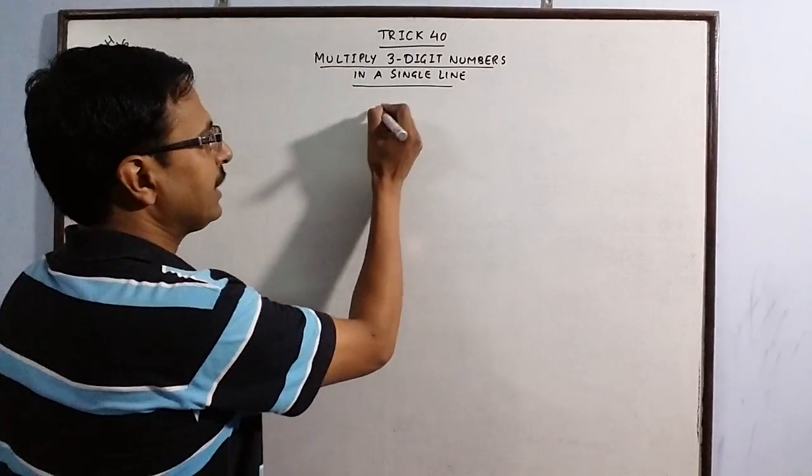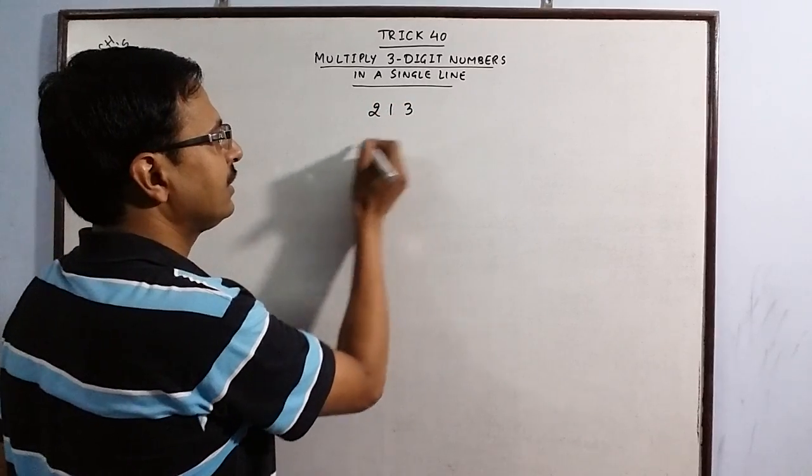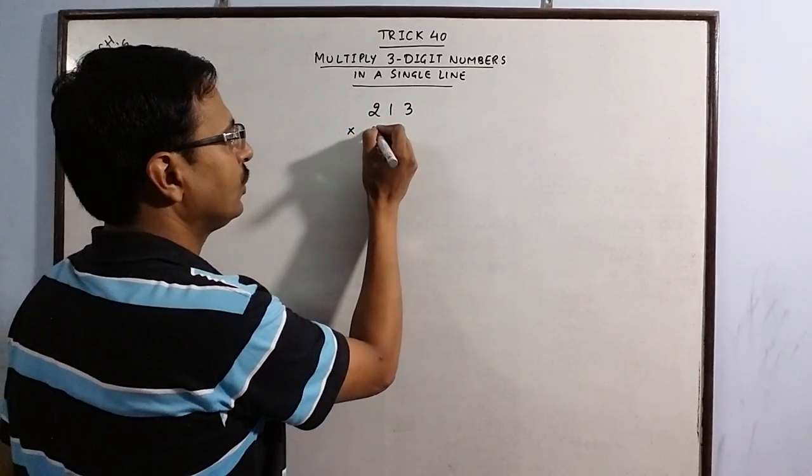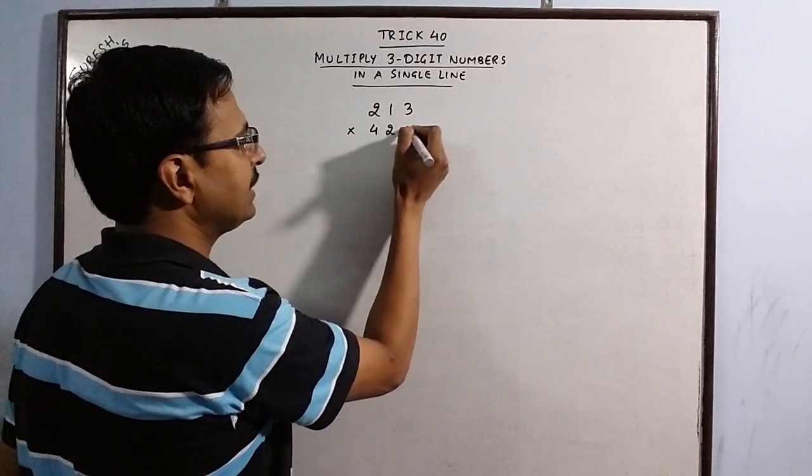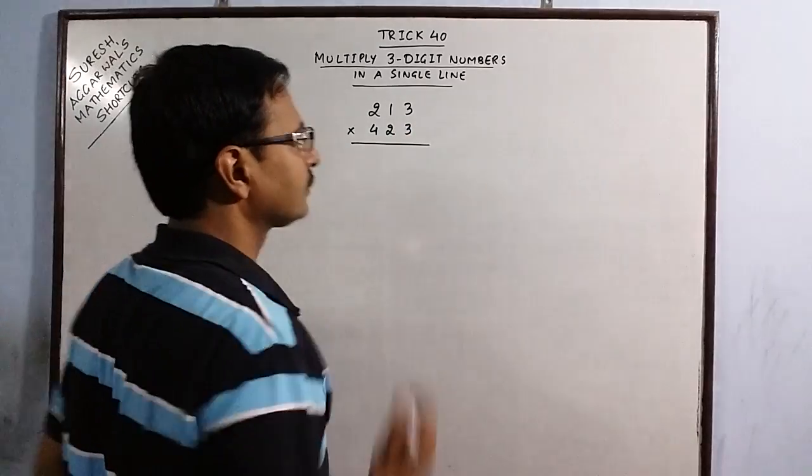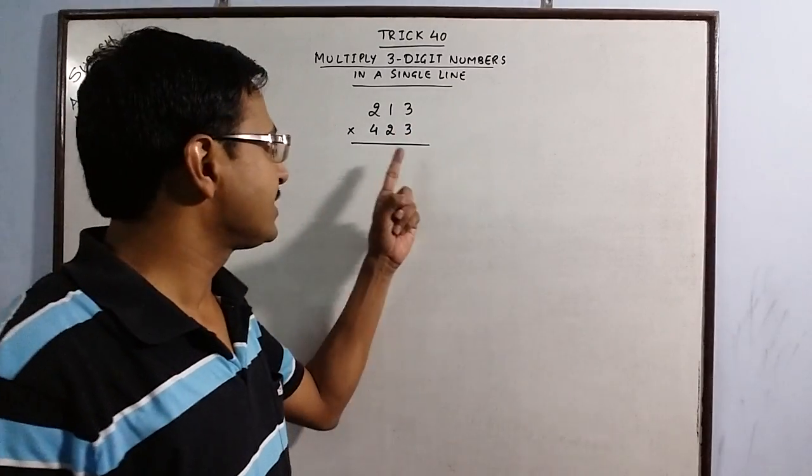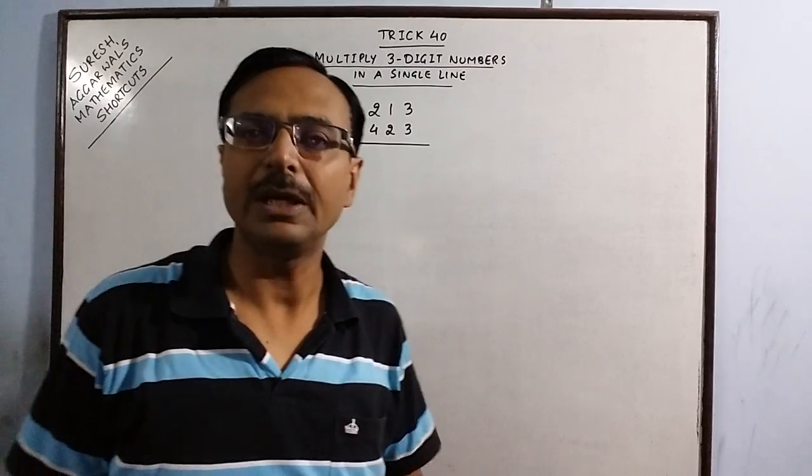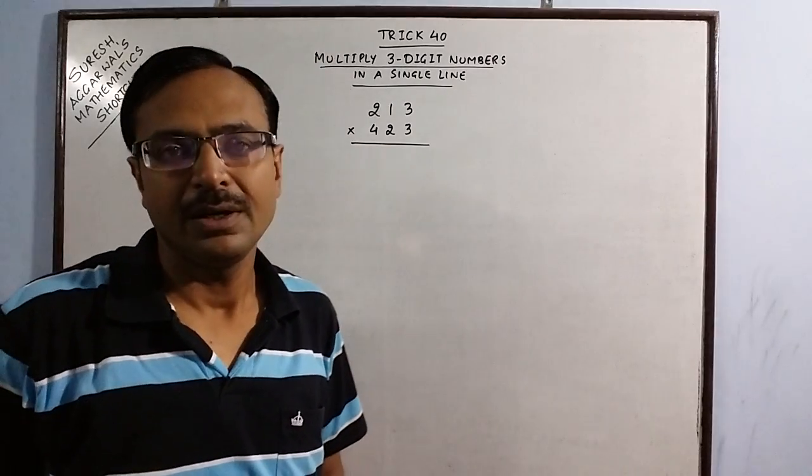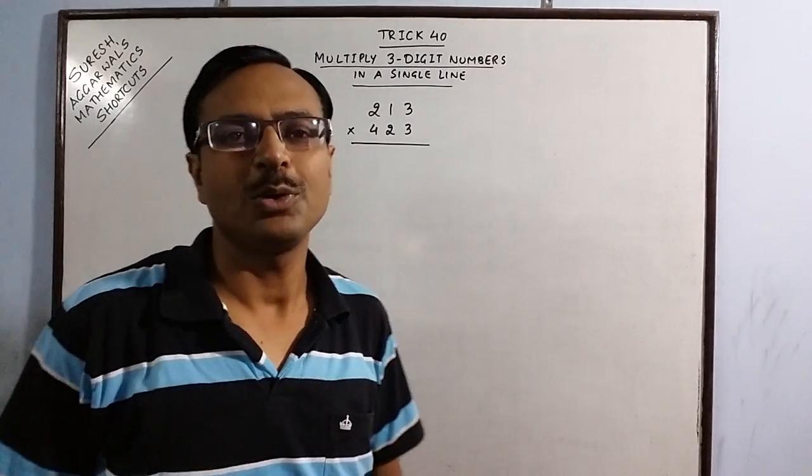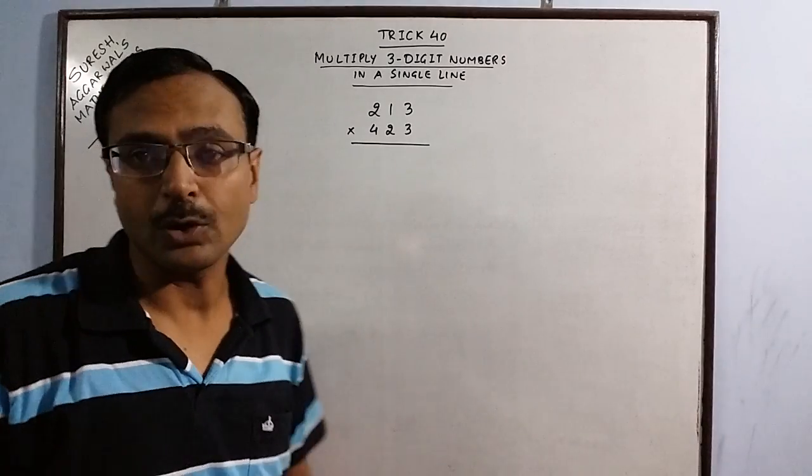The first example I am taking is 213 multiplied by 423. Now I have taken all digits below 5 just to make you understand the method, the Vedic method which I am going to use in calculating this product.